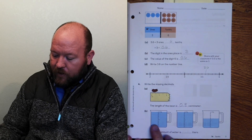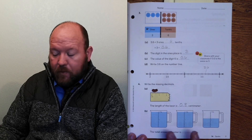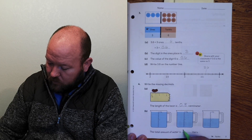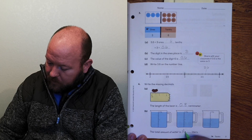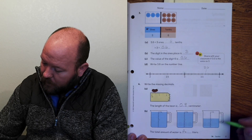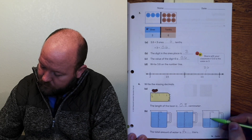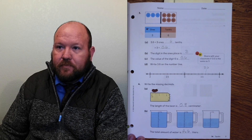Here, I have two full ones — that's going to be my whole numbers. How much tenths do I have? 1, 2, 3, 4, 5, 6. So 2 and 6 tenths.